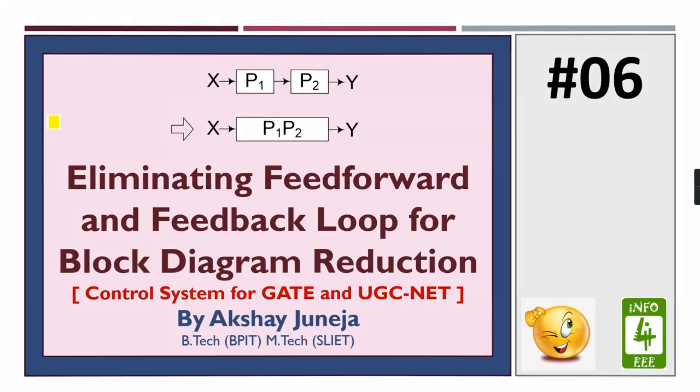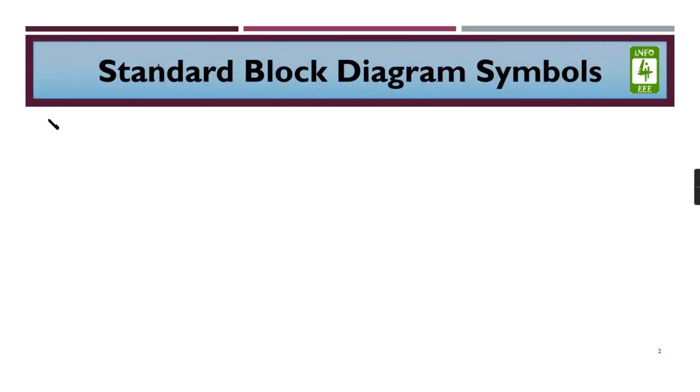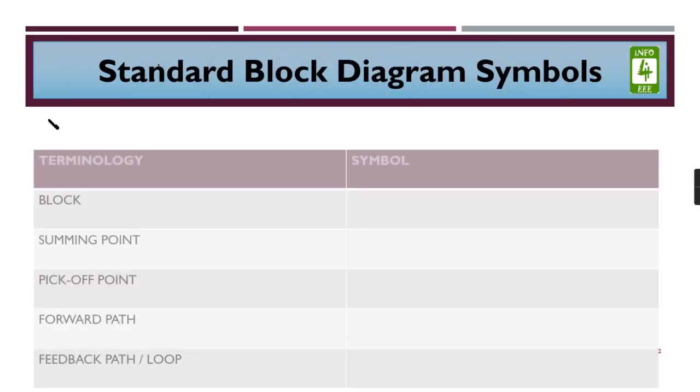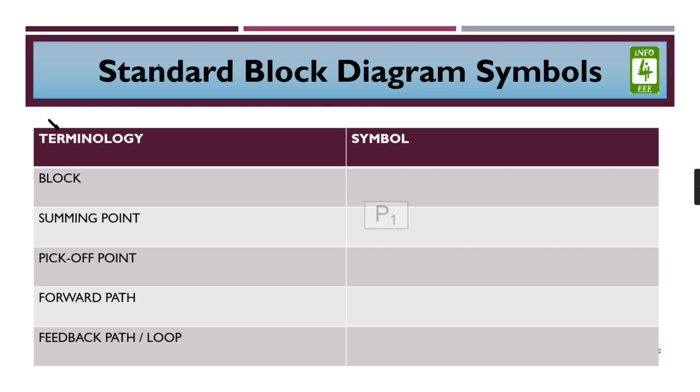So let us start with today's lecture. Here are some notations which you have to remember before proceeding. This is a block. This is how we represent a block. For summing point, this is a summing point where two or more signals can be added or subtracted as per the desire. This is the pick-off point where we start a new branch for a different signal or the same signal.